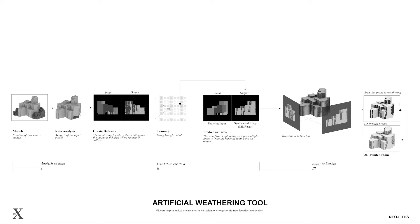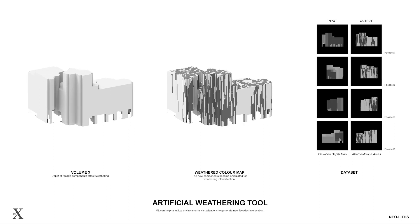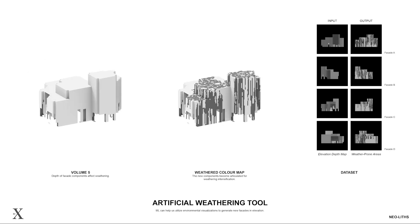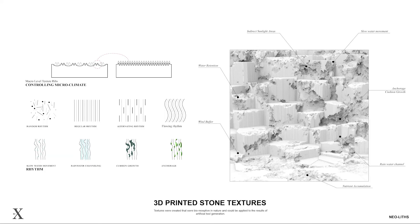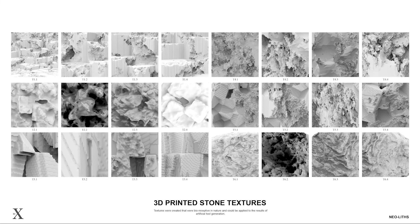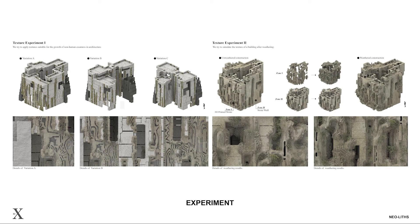By creating procedural models and running them through rain analysis simulations, we created new datasets to train the machine to identify the weather-prone areas based on the different depth levels of each elevation. We then generated 6 volumes to run the artificial weathering tool to generate a color depth map for prediction. Most of the rainwater concentrates at the corners; thus, this condition acquires intricate texturing through the use of 3D printed stone. A set of factors responsible for the habitation, propagation, and growth of non-human organisms were considered to design the textures, which will be applied to the areas indicated by the artificial weathering tools.